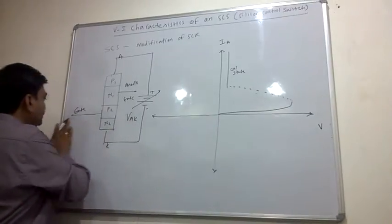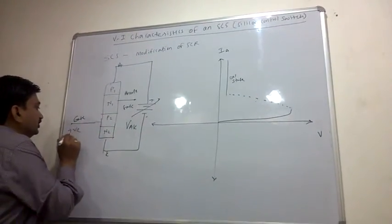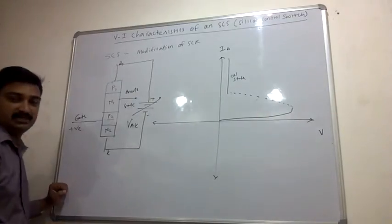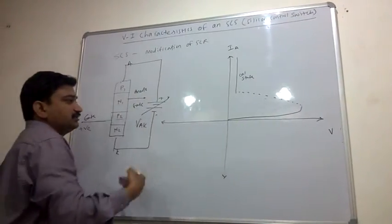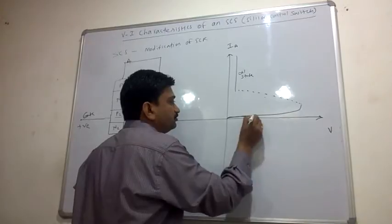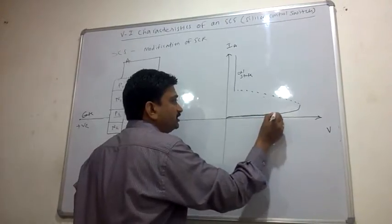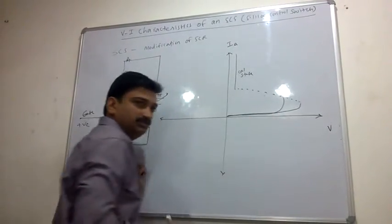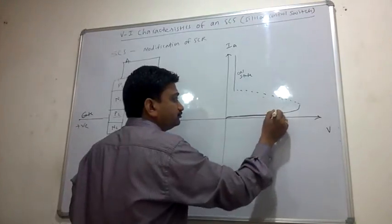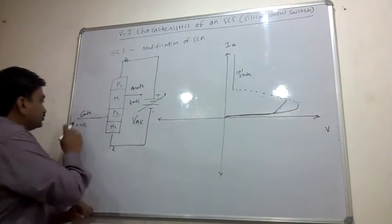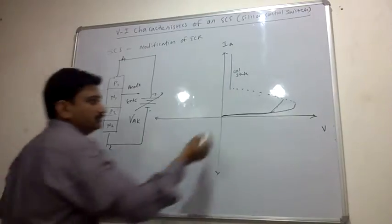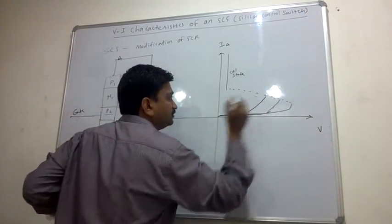If you provide some positive voltage at the cathode gate, due to that positive voltage P2 gets forward biased, and the same process is repeated. That means, if you increase the voltage, the blocking state will reduce and the device will turn on immediately. Increasing positive voltage further produces the same effect.